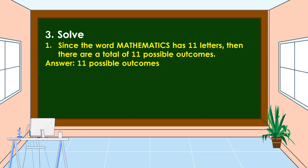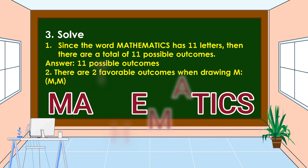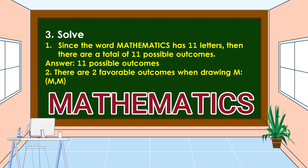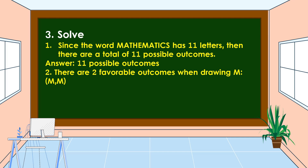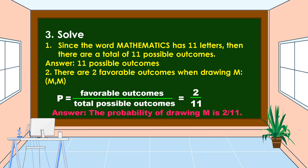For the second question, there are two favorable outcomes when drawing M — we have two letter M's in the word mathematics. The formula for finding the probability is: P equals favorable outcomes over total possible outcomes. The favorable outcomes is 2 and the total possible outcomes is 11. Therefore, the probability of drawing M is 2 over 11.